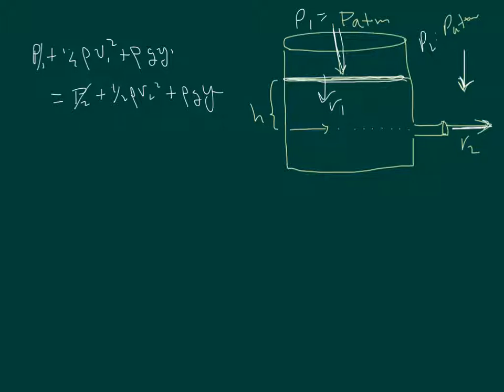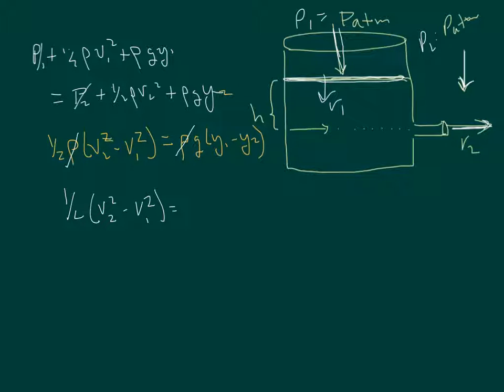And we're left with one half rho v2 squared minus v1 squared is equal to g times y1 minus y2. We have the density on both sides of the equation. So let's cancel out the density rho. And we're left with one half v2 squared minus v1 squared is equal to g times y1 minus y2.